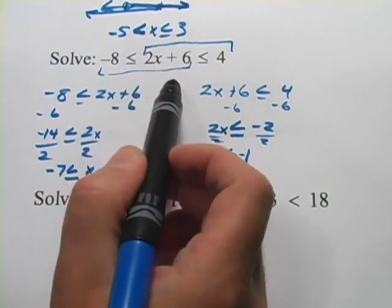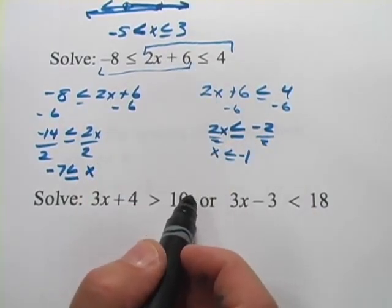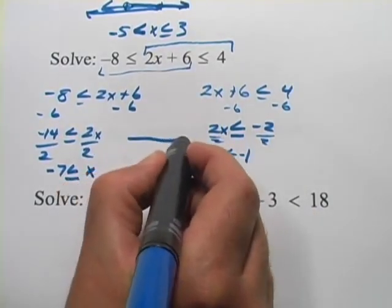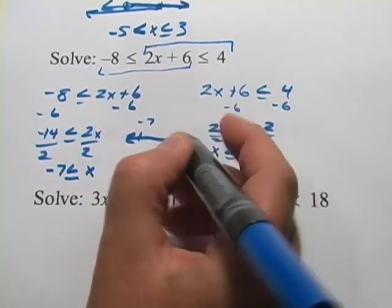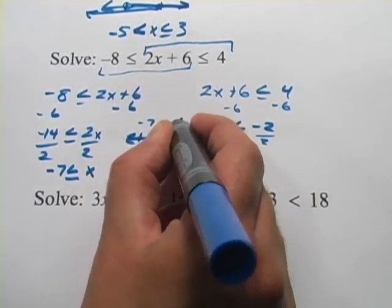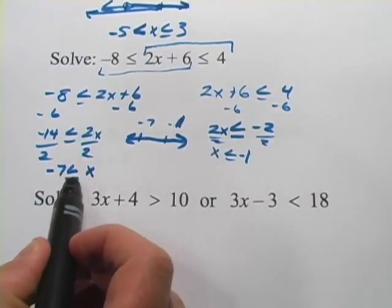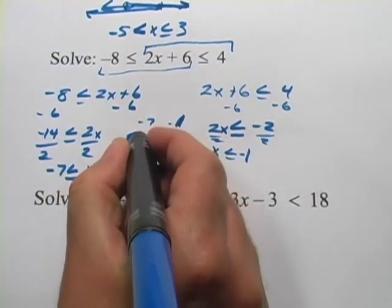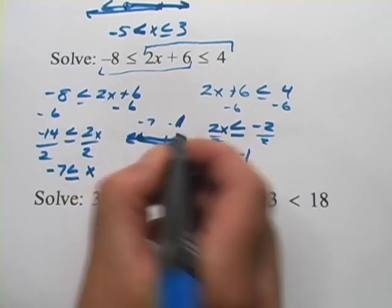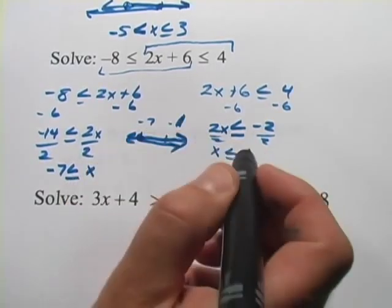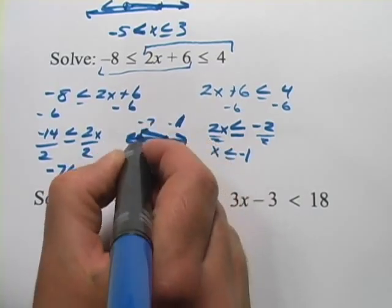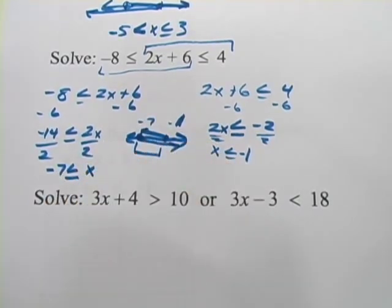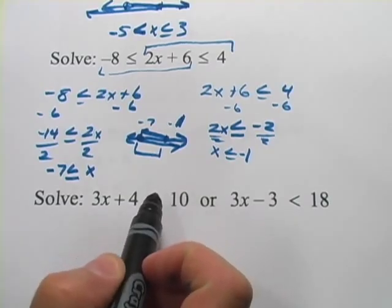Now this is an and problem like we had up there too and so you might want to sketch this out. You've got negative 7, you've got negative 1 and x is going to be greater than or equal to negative 7 so all the stuff going that direction. And x is going to be less than or equal to negative 1 so all the stuff going that direction. So it's really this chunk in the middle again that we're looking for.